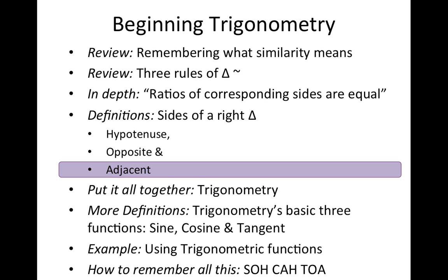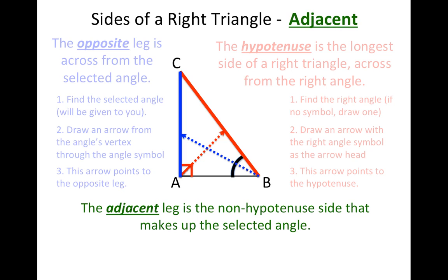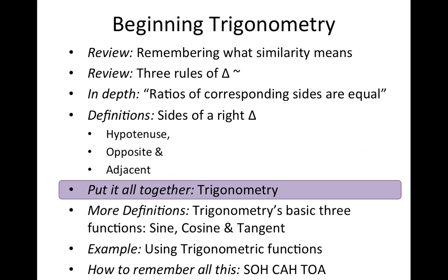And then finally we have adjacent. Adjacent just means the one that's next to it — the non-hypotenuse leg that makes up the selected angle. Essentially, if you identify the hypotenuse and the opposite, the adjacent is what's left over — the remaining unselected side. Now that I have these three sides, we can put it all together: the idea of similar triangles, the ratios of corresponding sides are equal, and these three different sides of all right triangles to form trigonometry.